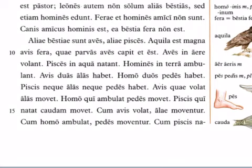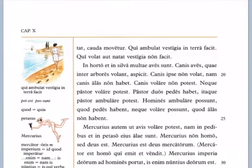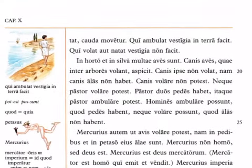Cum aues volat, alae moventur — when a bird flies, its wings are moved. The -ntur ending is the plural passive ending because wings are plural and they are being moved passively. Cum homo ambulat, pedes moventur — when a person walks, the feet are being moved. Cum pisces natat, cauda movetur — when a fish swims, the tail is moved. Movetur has the singular passive ending because cauda is a singular subject.